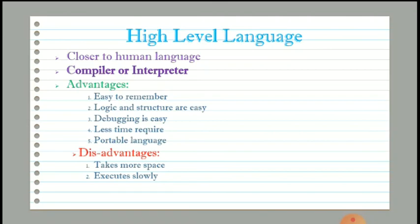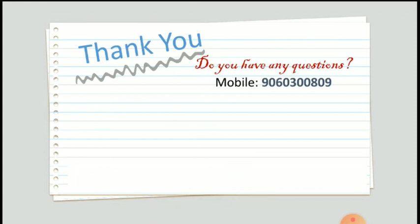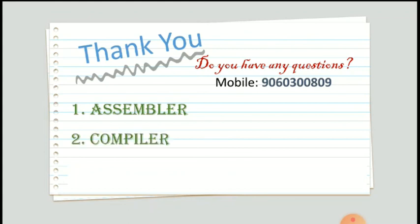That's it for today's session. In the next session we will see the different types of translators required to convert middle level and high level language into low level machine language. Low level language can be executed directly by the computer. An assembler is required for middle level instructions, and a compiler or interpreter is required for high level language. These translators convert instructions into binary code that the computer can understand.